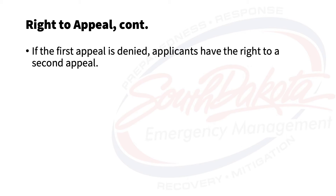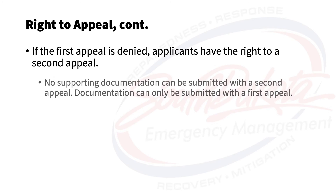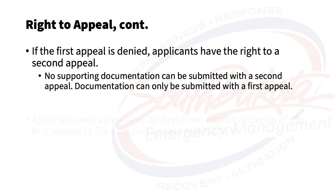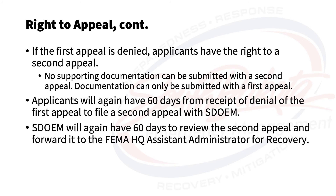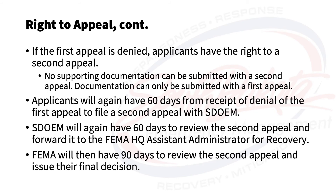If the first appeal is denied, applicants will be notified of the decision and their right to a second-level appeal or arbitration. No supporting documentation can be submitted with a second-level appeal. Applicants will again have 60 days from receipt of denial of the first appeal to file a second appeal with SDOEM. SDOEM will then have 60 days to review the second appeal and forward it along with their recommendation to the FEMA Headquarters Assistant Administrator for Recovery. FEMA will then have 90 days to review the second-level appeal and issue their final decision.